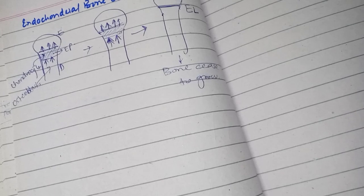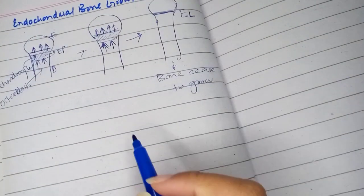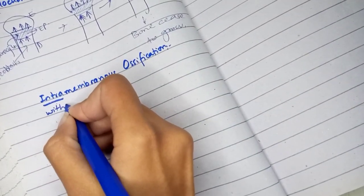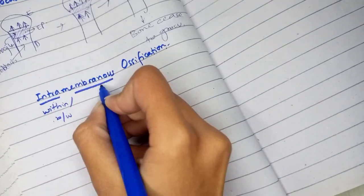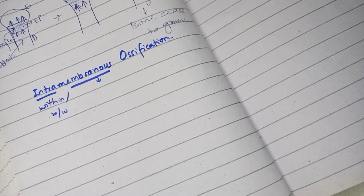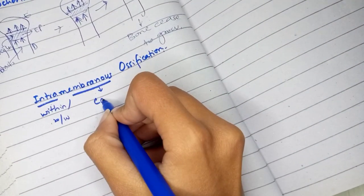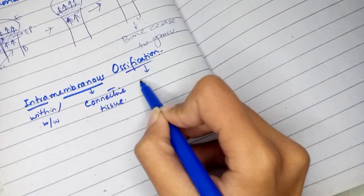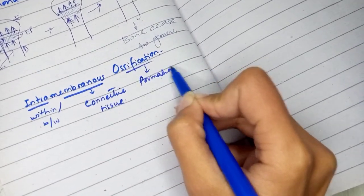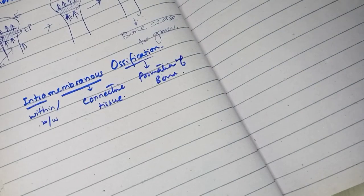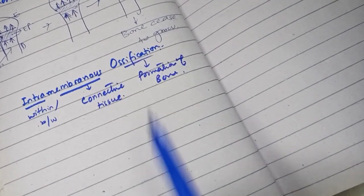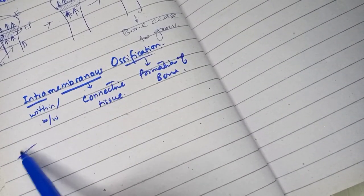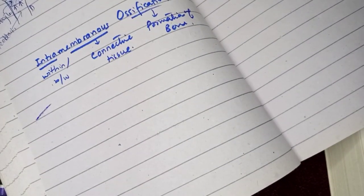Now let's discuss intramembranous ossification in more detail. 'Intra' means within or between, 'membranous' refers to the connective tissue, and 'ossification' means formation of bone. So intramembranous ossification means the bone is going to be formed within or between the connective tissues.